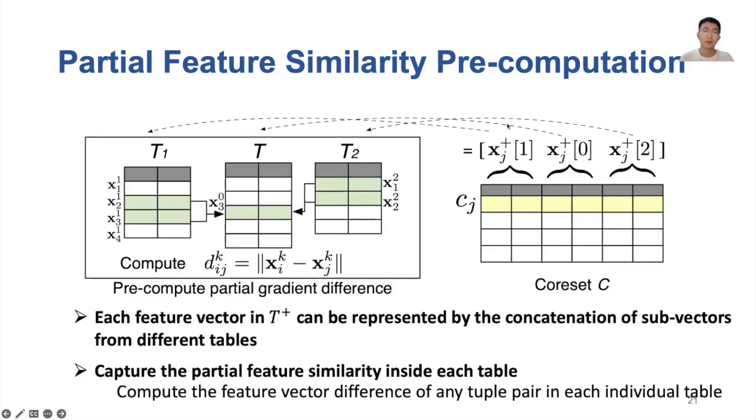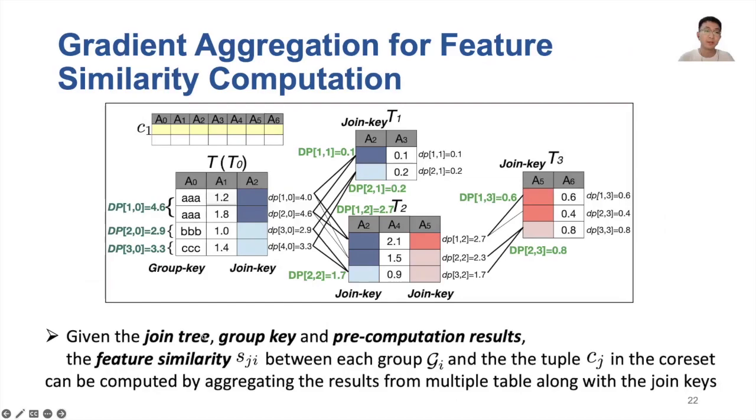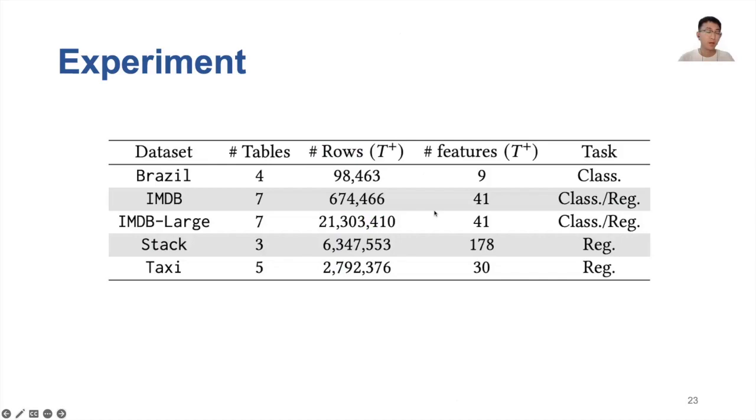The reason we can pre-compute the partial feature similarity is that each feature vector in T-plus can be represented by the concatenation of subvectors from different tables. Intuitively, to capture the feature difference in T-plus, we can first compute the partial feature similarity inside each table. Hence, we push down the computation to each individual table as a pre-computation step. To be specific, for each table, the feature vector difference of any tuple pair is computed. Then, given the join tree, group k, and pre-computation results, the feature similarity in T-plus can be computed by aggregating the results in each table without materializing T-plus. To this end, we propose a dynamic programming algorithm to efficiently compute the feature similarity between each group and each tuple in the coreset. For more details, please refer to our paper.